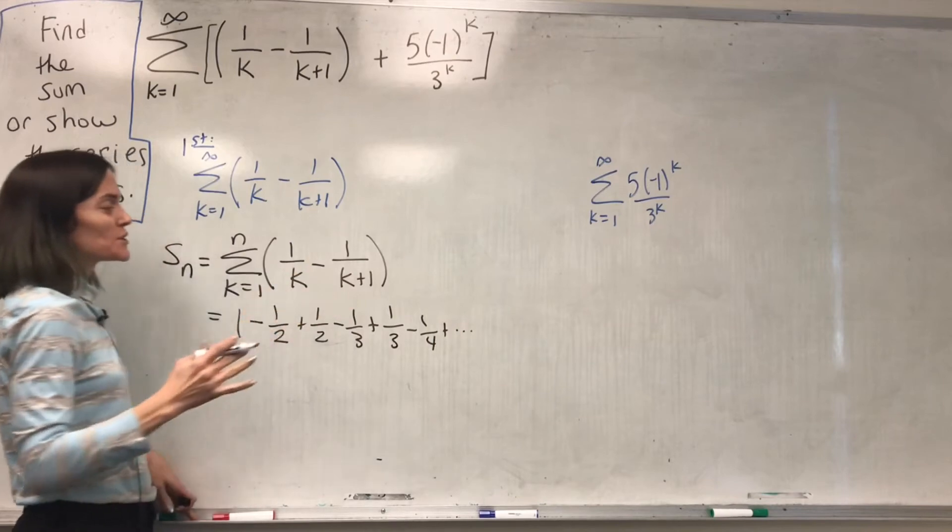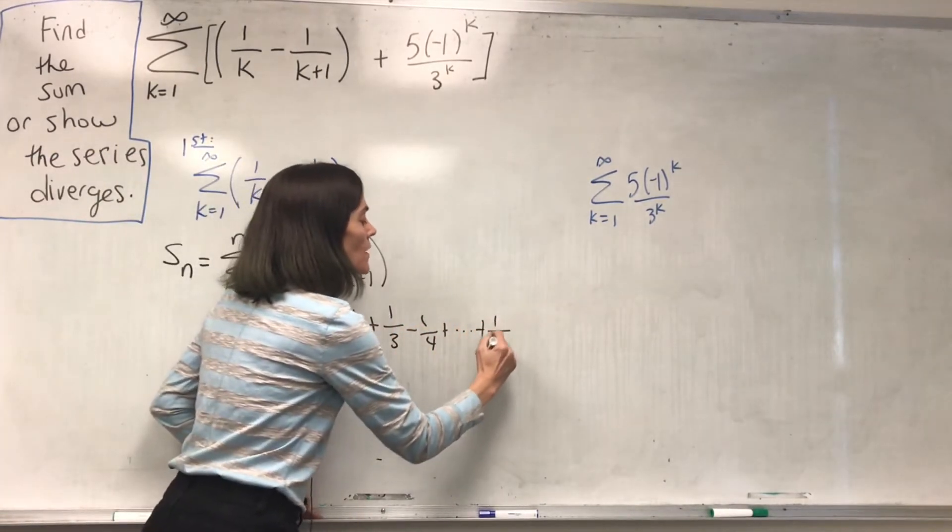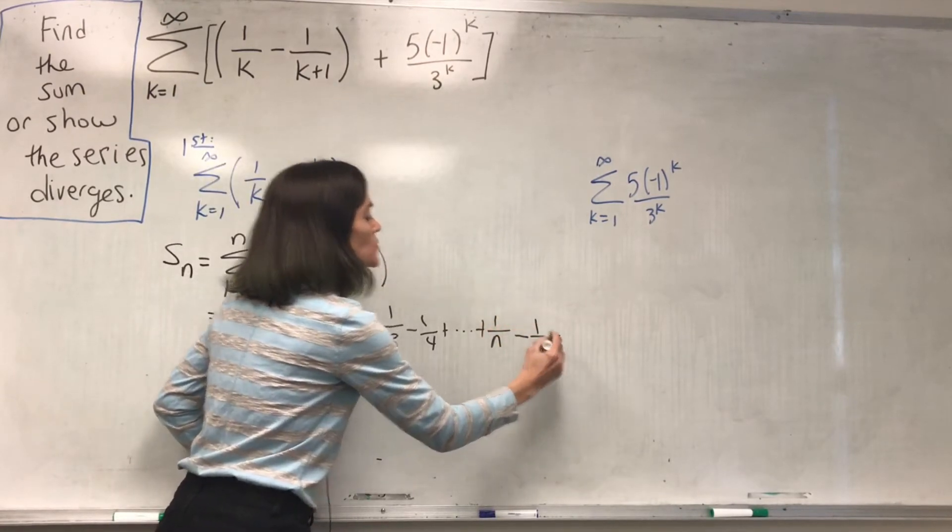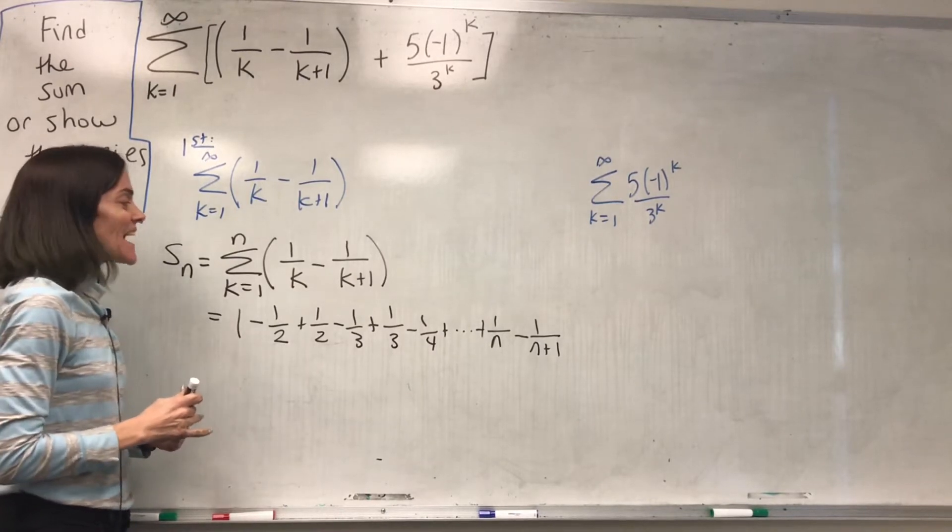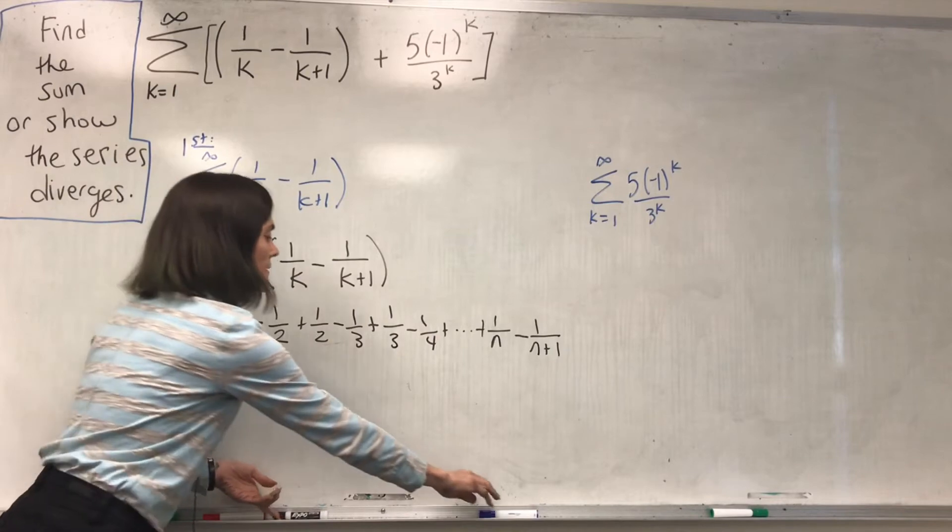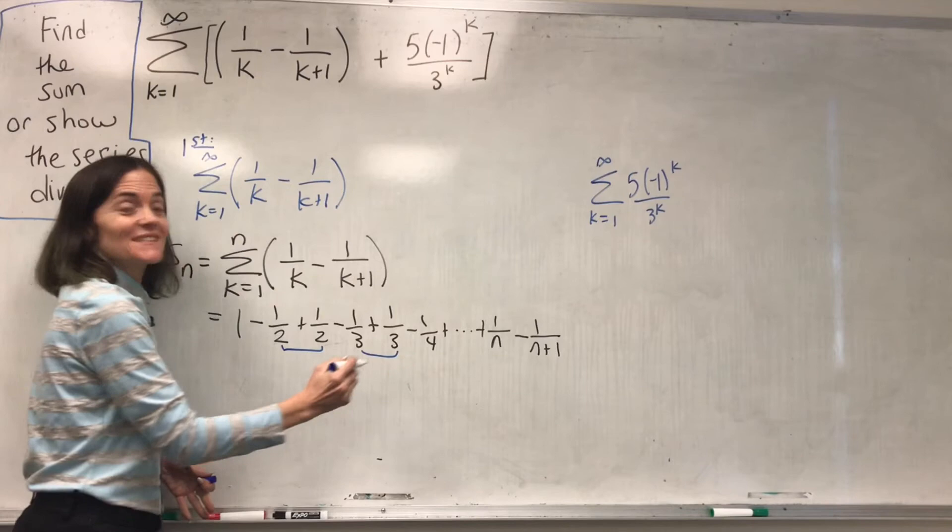And maybe I will just write the nth one. When k equals n, we have 1 over n minus 1 over n plus 1, like this. Now we see this is telescoping, because here these add to zero, these add to zero.